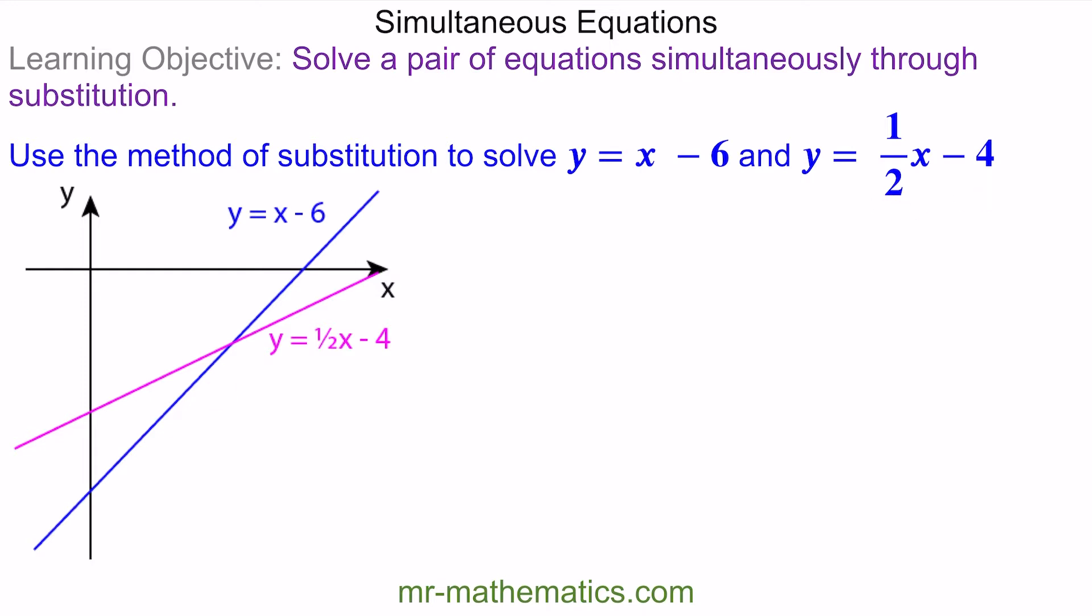You can see the two graphs here. We have a blue line, x minus 6, and a pink line, half x minus 4. At this point, the two equations are equal to each other, so they share the same x value and the same y value.